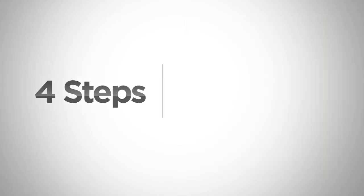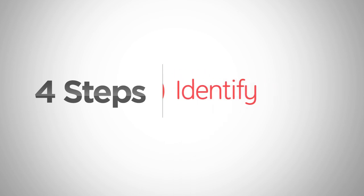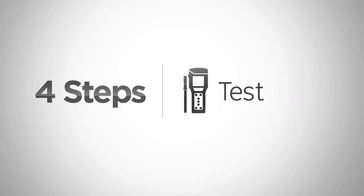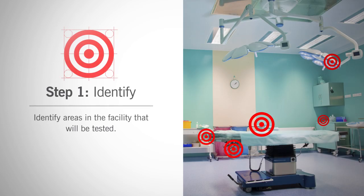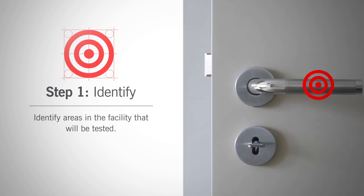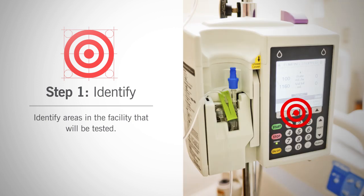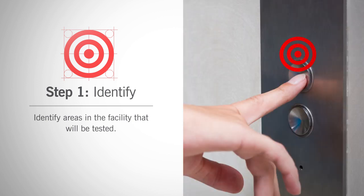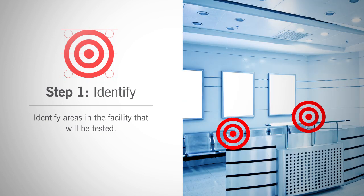To determine custom RLU limits for your facility, complete this four-step process: Identify, Clean, Test, and Calculate. Step 1: Identify areas within the facility that will be tested. At minimum, locations that are typically tested are high-touch point surfaces where the chance of spreading bacteria is high. Monitoring of low-risk surfaces on a less frequent basis is also essential to verifying the facility is being thoroughly cleaned.